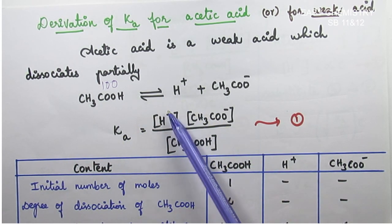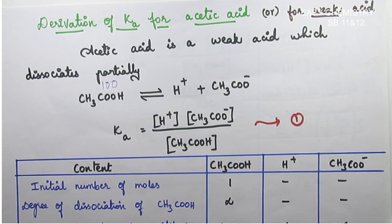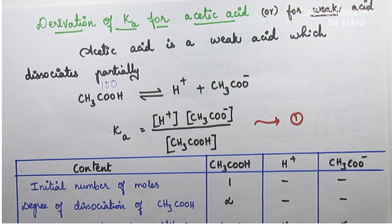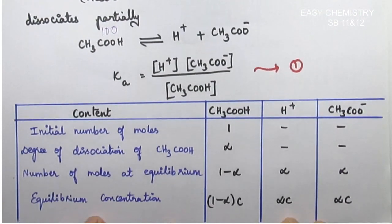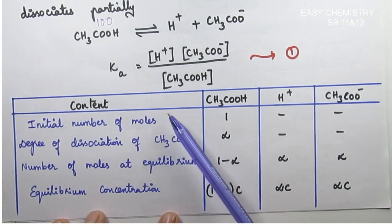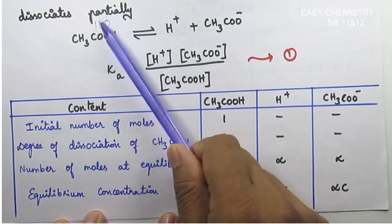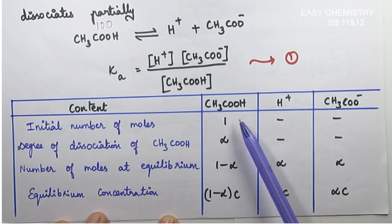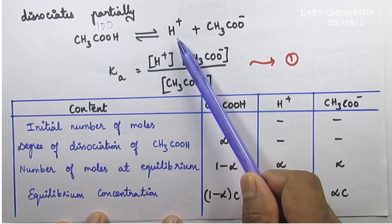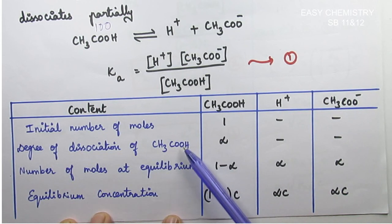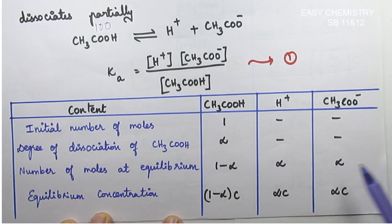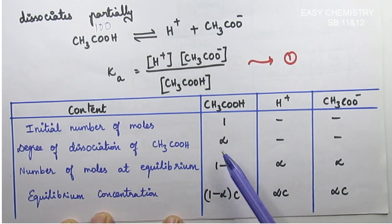For the derivation, we consider the initial number of moles. For acetic acid, the initial moles are 1, and for H⁺ and acetate ion it is 0. The degree of dissociation is alpha — if we start with 1 mole and alpha moles dissociate, alpha is a very small fraction. For example, out of 100 molecules, only 10 dissociate, so alpha equals 10/100, a very small value.